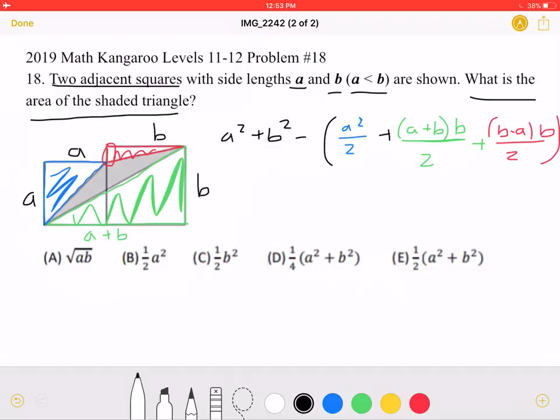Now, we must continue to simplify, getting that A squared plus B squared minus A squared plus AB plus B squared plus B squared minus AB all over two. And you can see that the AB's will cancel.